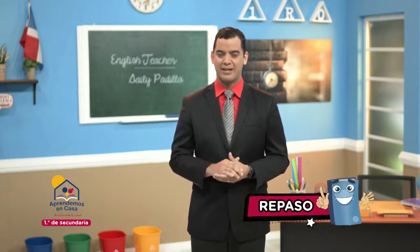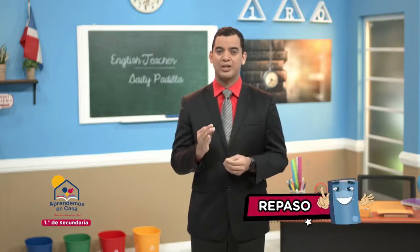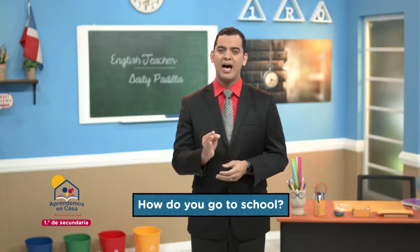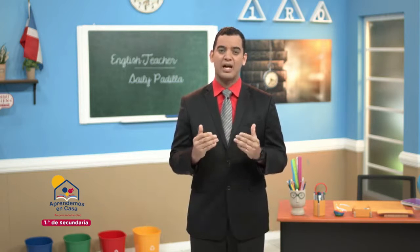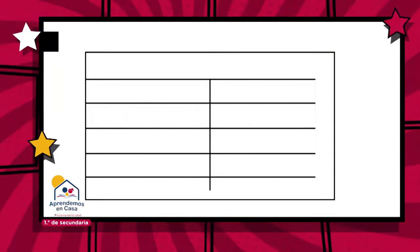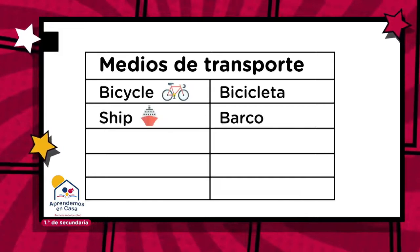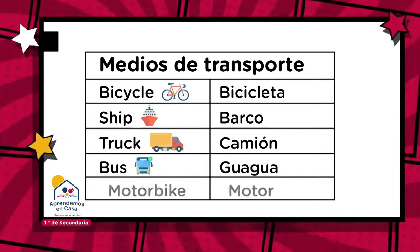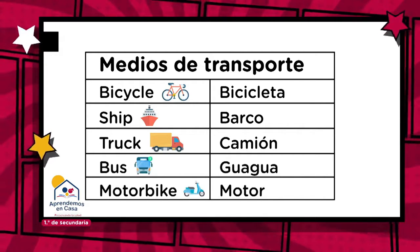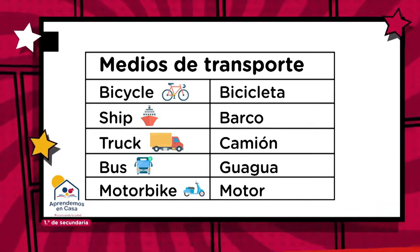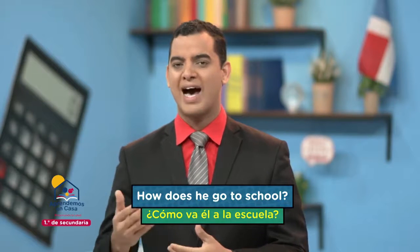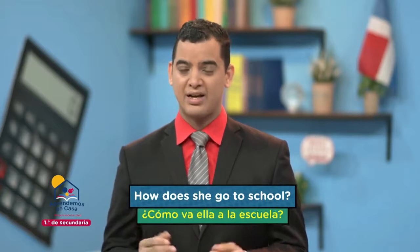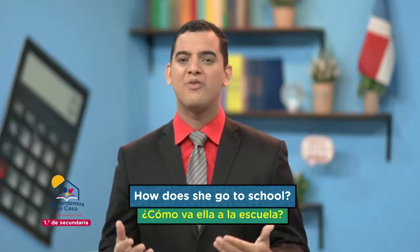Repasemos nuestra clase pasada. En esta aprendimos a hacer preguntas utilizando el verbo to go. Por ejemplo, How do you go to school? ¿Cómo vas a la escuela? Además, aprendimos algunos medios de transporte. También aprendimos a hacer preguntas sobre una tercera persona. Por ejemplo, How does he go to school? ¿Cómo va él a la escuela? Y sobre ella, How does she go to school? ¿Cómo va ella a la escuela?